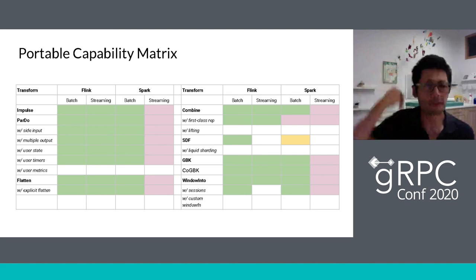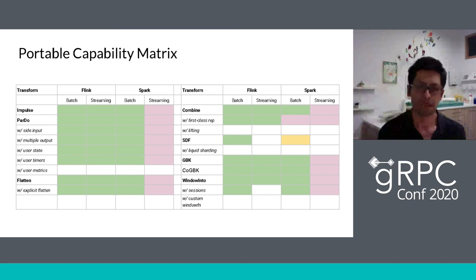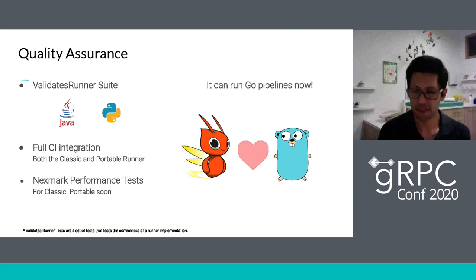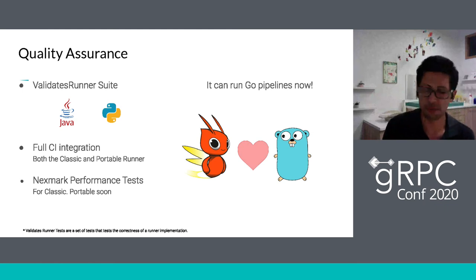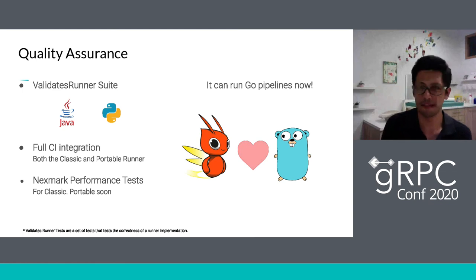Another interesting outcome is that this new architecture allows cross-language pipelines, meaning pipelines with steps in different languages. One use case: you may not have an available connector for a data store in your language but it exists in another — you can use the Java API from Python just to get the data in. Or the opposite: you can use an inference function from TensorFlow's Python API from Java.